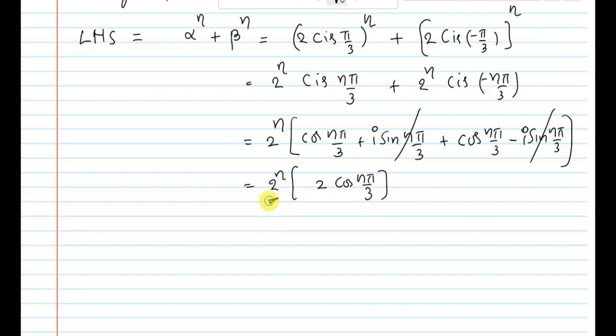2 to the power n times 2 equals 2 to the power n plus 1 into cos n pi by 3. That is what the RHS is, which is what the question asks.